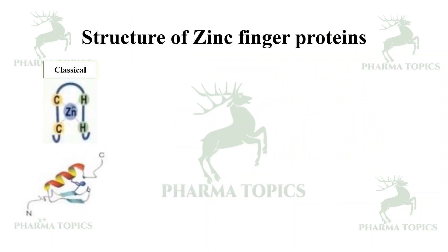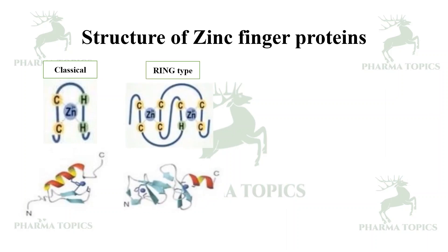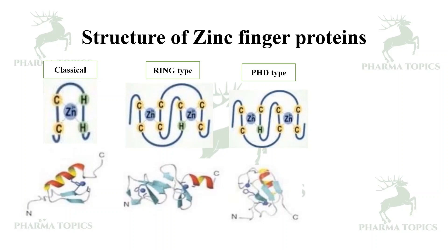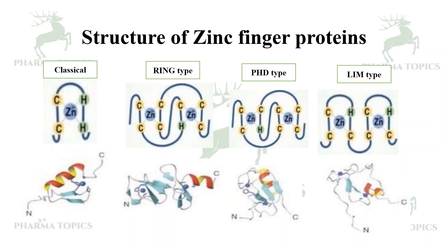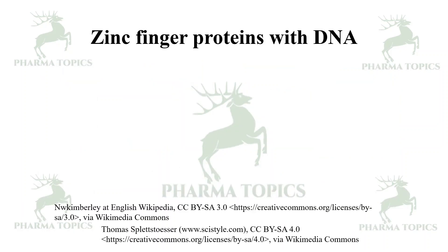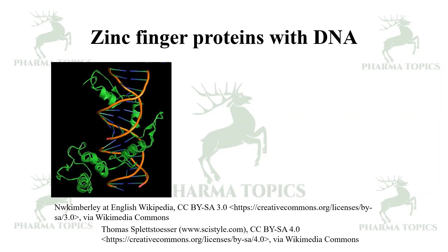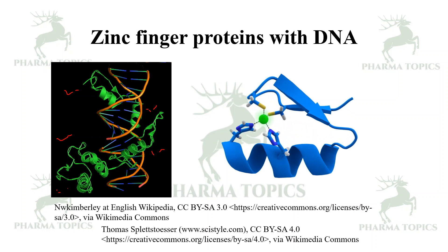There are four types of zinc finger proteins: the classical zinc finger, a ring type which appears like a ring, a PHD type, and a LIM type. When seen interacting with DNA, there are five zinc fingers wound around the DNA. These proteins are typically found associated with DNA.